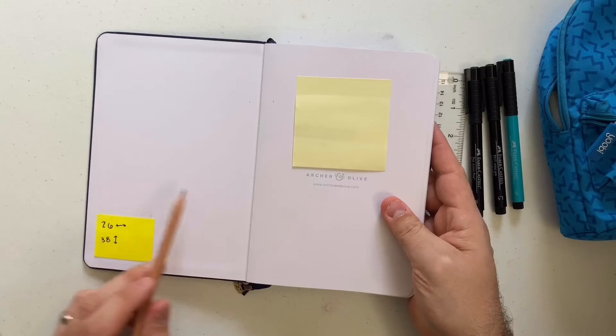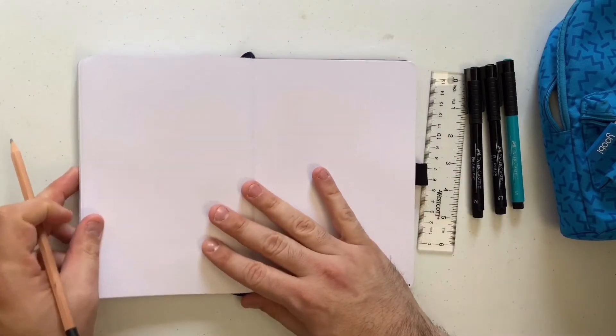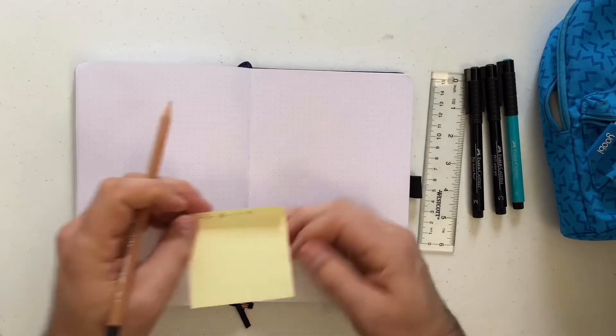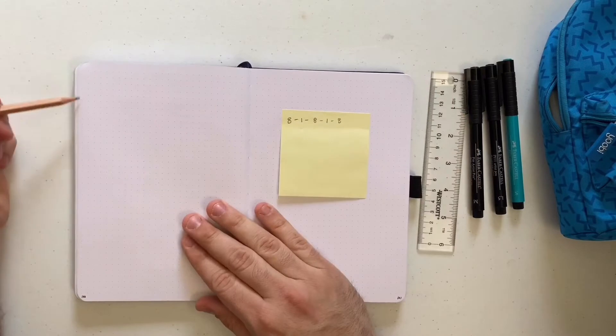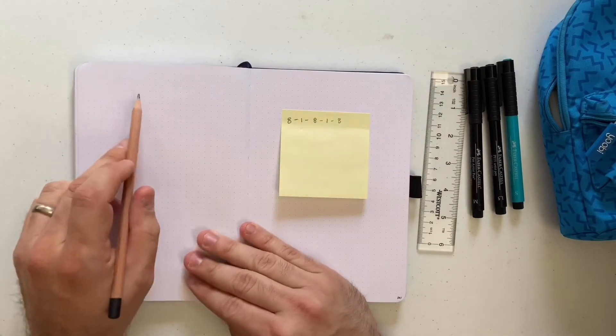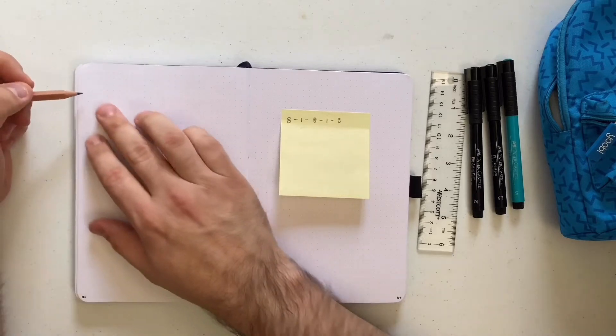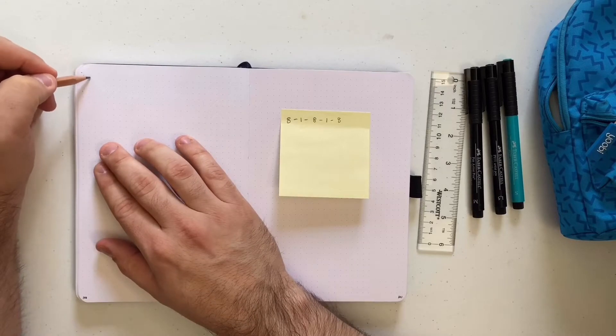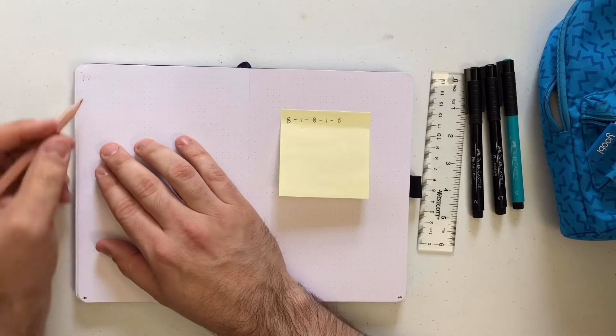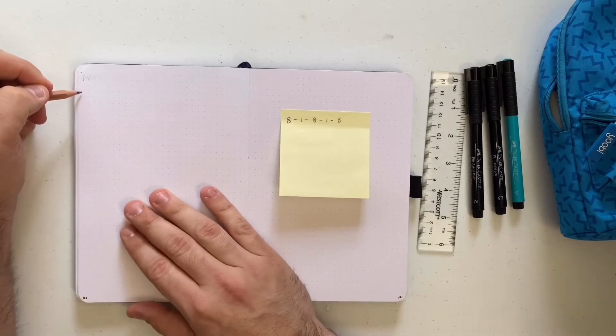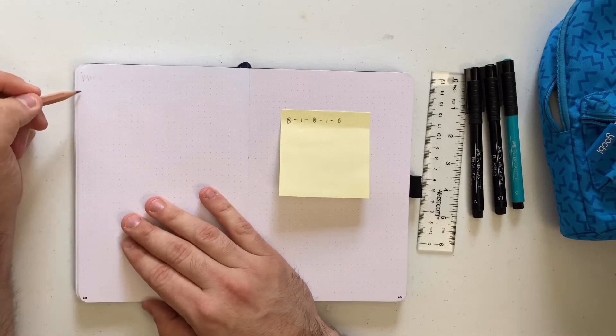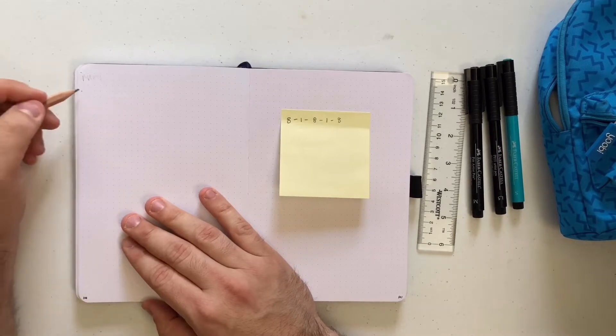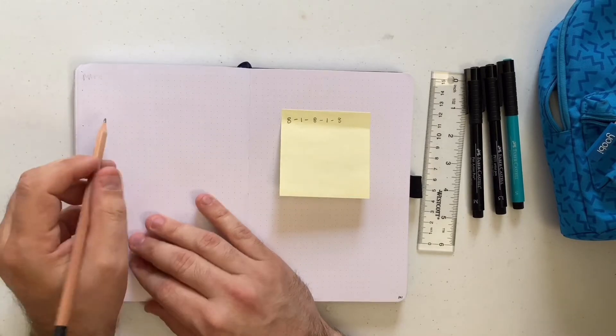A little tip that I have been using for quite some time now is I actually write down my page grid layout in the front of my notebook so I can always remember. So in this Archer and Olive that I have now, it's 26 across, 38 down. And that 26 across is going to be the most important part here. So I've done the math ahead of time because I don't want to embarrass myself on camera. We're going to leave eight spaces for the boxes, and then we're going to leave one space in between each of those.